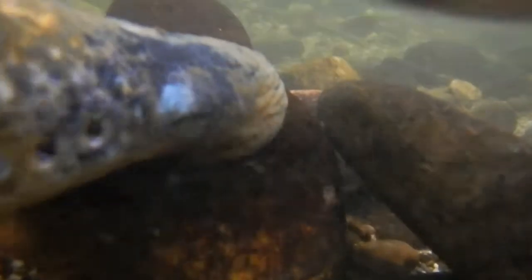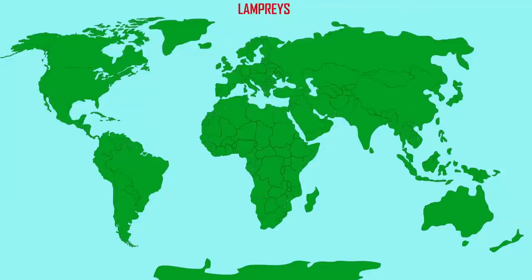There are only two types of jawless fish in the world: lampreys and hagfish. Lampreys form an order of fish which can be divided into three families. Two of the families are only found on southern continents — southern South America and Australia and New Zealand.